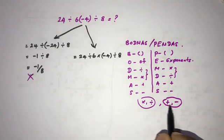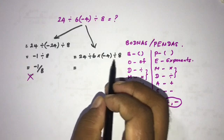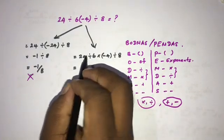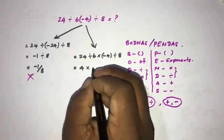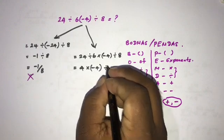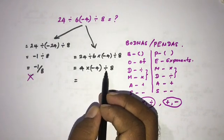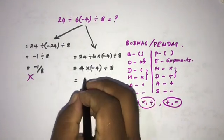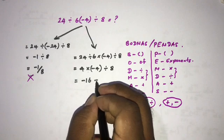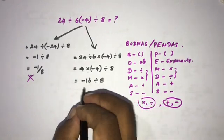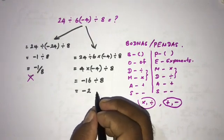Since division and multiplication have the same precedence, we work from left to right. First: 24 divided by 6 equals 4. Then: 4 times minus 4 equals minus 16. Then: minus 16 divided by 8 equals minus 2. So the correct answer is minus 2.